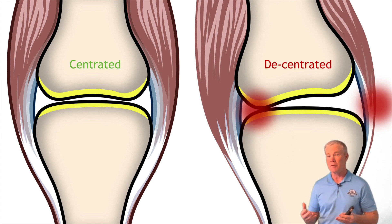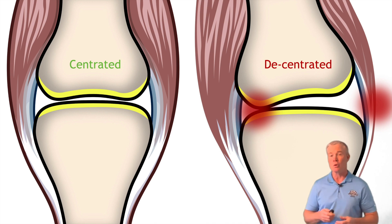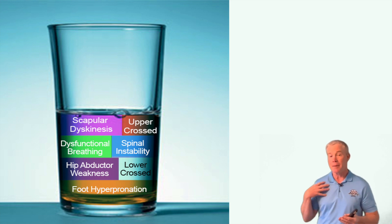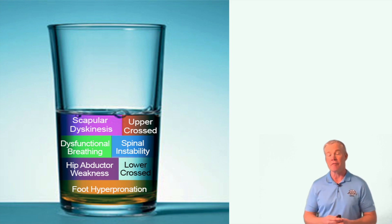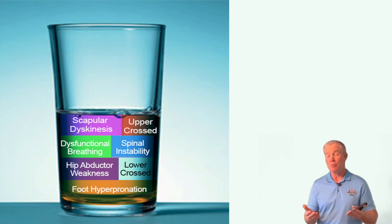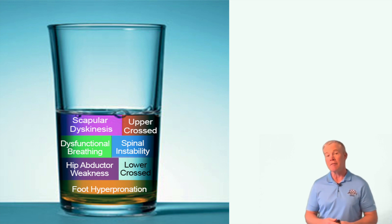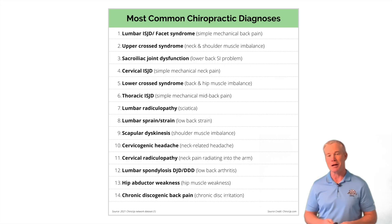It also causes stretching of the other capsule, weakening of that outside muscle, and a constant shortening of the other muscle, leading to a self-perpetuating problem. There are a number of things that decentrate joints, and those are the functional deficits — things like scapula dyskinesis all the way down to foot hyperpronation. I think of them like things that fill a glass. My patient comes in when their glass overflows, and the most important things I need to take out of the glass are those underlying functional deficits that led to the problem in the first place.